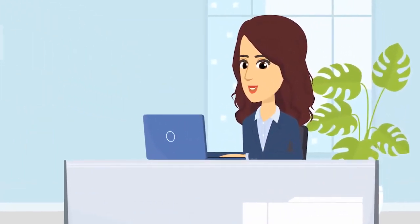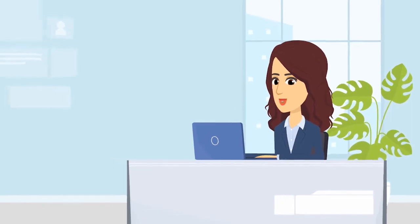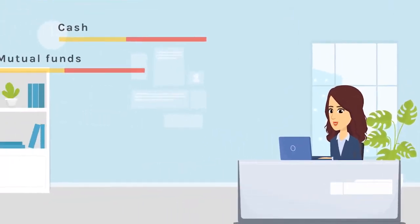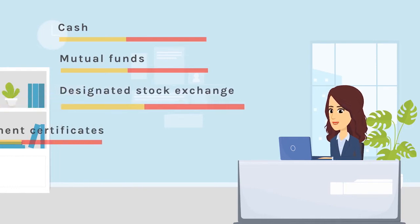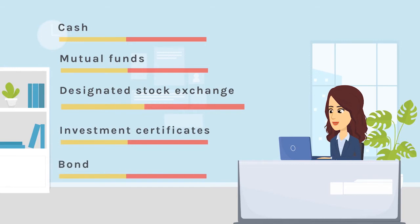Generally, the types of investments that are permitted in a TFSA include cash, mutual funds, securities listed on a designated stock exchange, guaranteed investment certificates, bonds, and certain shares of small business corporations.